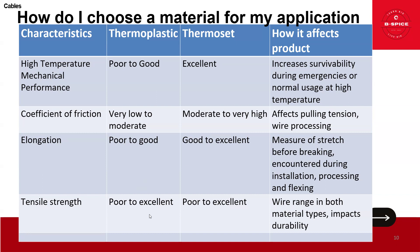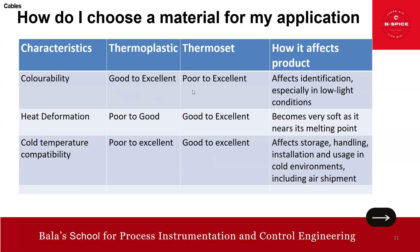Tensile strength shows a wide range in both material type and impact durability — not much difference between the two. But when it comes to high temperature, thermoset scores. Coefficient of friction — thermoset scores. Elongation — thermoset scores. Colorability: thermoplastic is good to excellent; thermoset is poor to excellent — it affects identification especially in low light conditions, which is a challenge for thermoset.